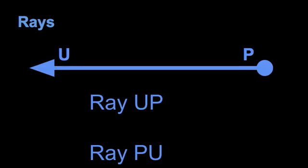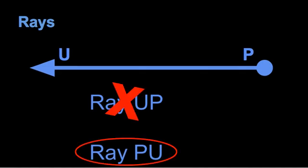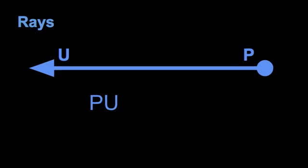Here's an example. I have two things written: ray UP and ray PU. Here's endpoint P, meaning this is where the ray starts, and it goes in the direction of U forever. If you said ray PU, you would be correct — I have to name it from where I'm starting to where I'm going. If I wanted to write shorthand, I first write the letter where I'm starting, which is endpoint P, and to where I'm going, which is U. I start my ray notation at the letter P and draw it to letter U.